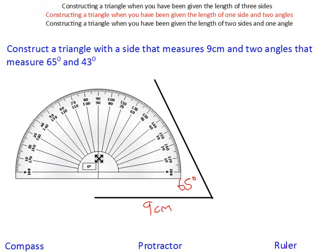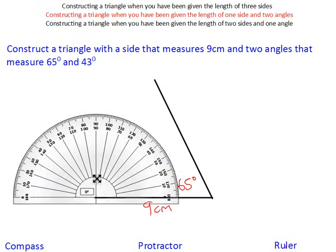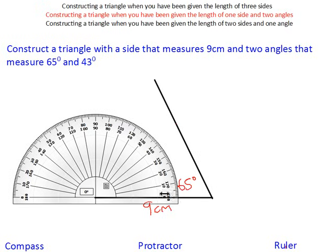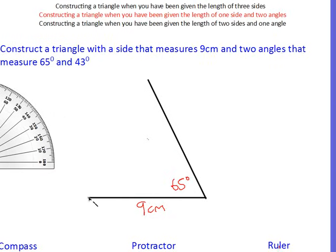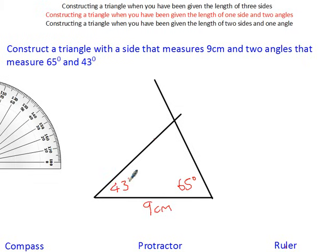The other angle over here has got to be 43 degrees. This time I'm going to use the inside scale because that's the one that starts at zero, and I'm going to count to 43. Mark it on. Move the protractor away, and then join that up with a ruler and pencil. Make sure you label that 43 degrees, and then that's your second triangle done.